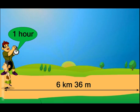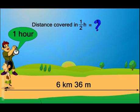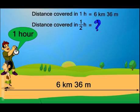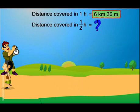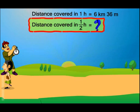Okay? Now let me ask you a question. How much distance did Mohit run in half an hour? Let's try and answer this question. What is given to us? It's given to us that Mohit ran 6 kilometers 36 meters in one hour and we need to find the distance which Mohit ran in half an hour.